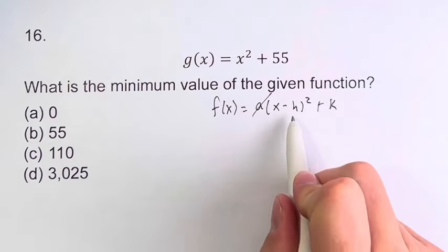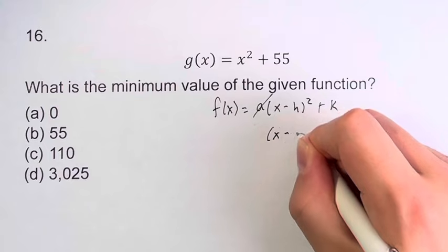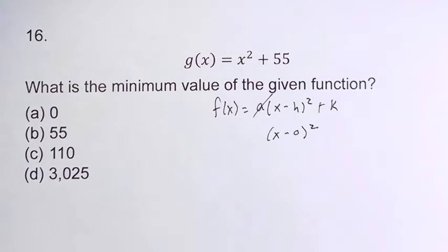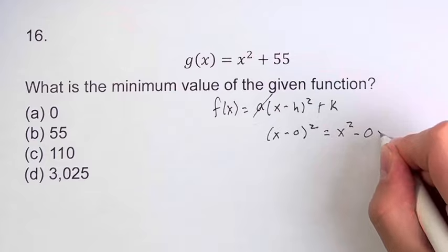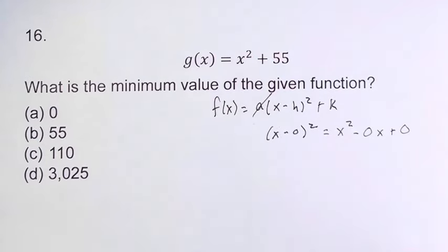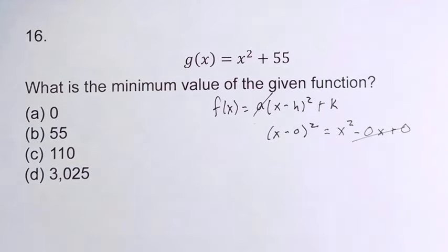Therefore, this whole term is just x minus 0 squared. Because that will give you x squared minus 0x plus 0. And this gives you the lack of an x term, right? Since 0x is 0, these just cancel. That gives you not having an x term in your quadratic.